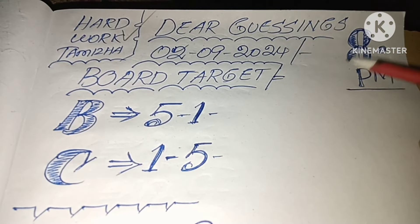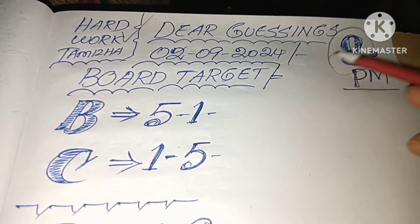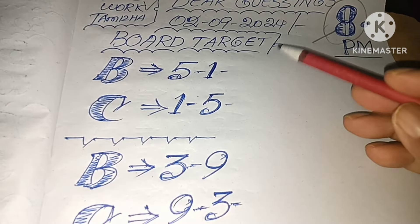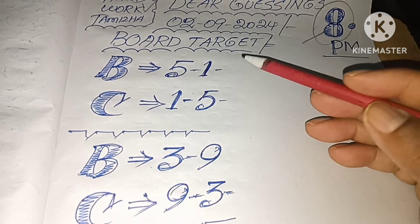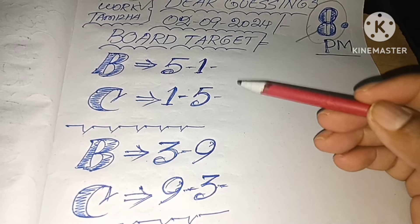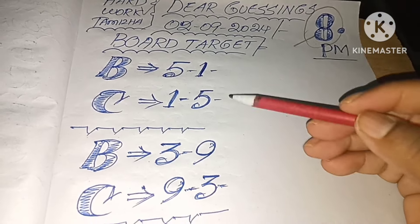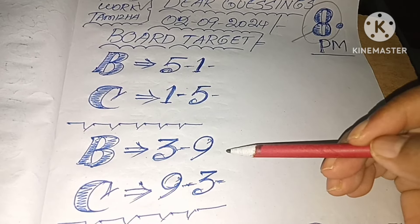We are going to get a board target. If we are targeting a board, we will get the 2 concepts. We will get the AB concept.